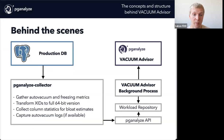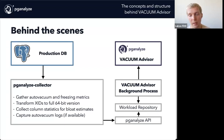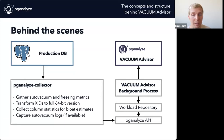For context on what we do behind the scenes: you have your production database, and the PG Analyze collector gets data from it. In the context of Vacuum Advisor, it gets information like auto-vacuum and freezing metrics. It transforms XIDs to the full 64-bit version so we can track epochs correctly. It can track column statistics for bloat estimates and also capture your auto-vacuum logs, for example by accessing the RDS APIs. One essential thing to understand: we don't store anything in your main production database. The PG Analyze system saves that data, and Vacuum Advisor accesses it to give you insights and recommendations.